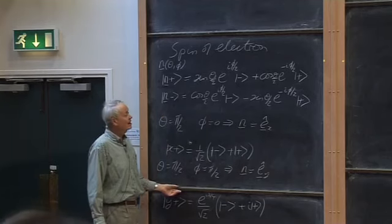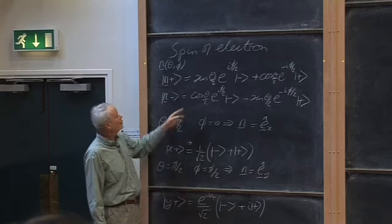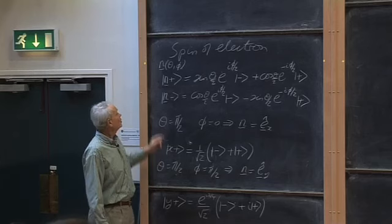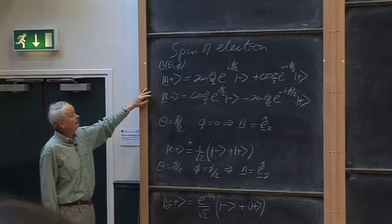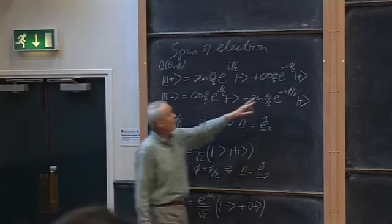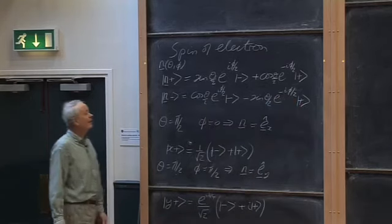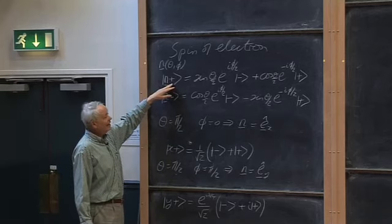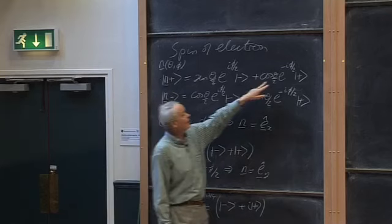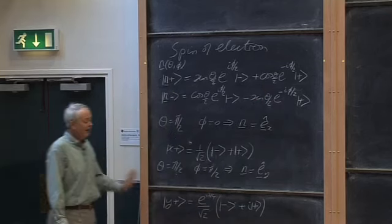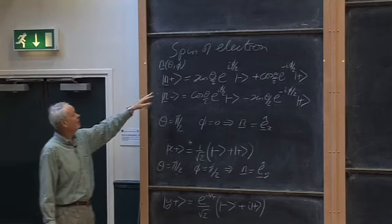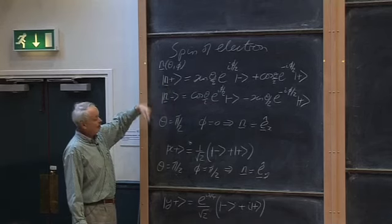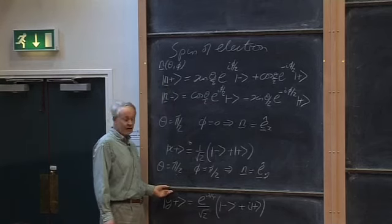I asked you to take that on trust, and then we did some work with it. I hope I persuaded you these formulae are not completely implausible — we calculated the probability that, if the spin is plus a half along z, we find plus a half along n, and found that probability is simply cos²(θ/2). This behaves plausibly: it's one when n is the z axis and goes to zero when n is the minus z axis.